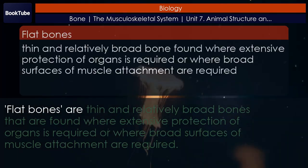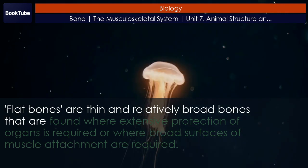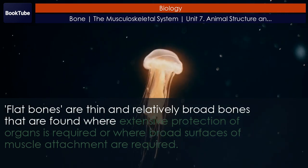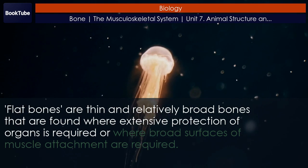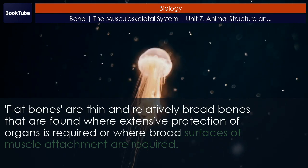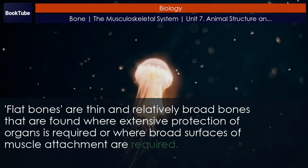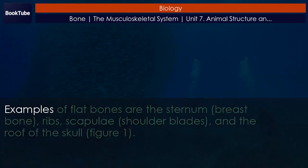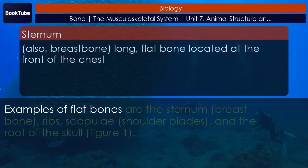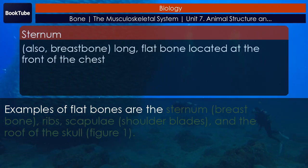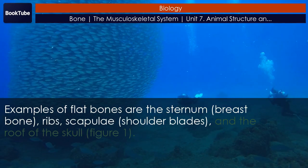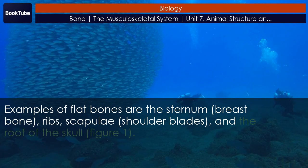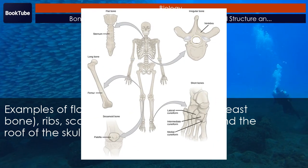Flat bones are thin and relatively broad bones that are found where extensive protection of organs is required or where broad surfaces of muscle attachment are required. Examples of flat bones are the sternum (breastbone), ribs, scapulae (shoulder blades), and the roof of the skull.